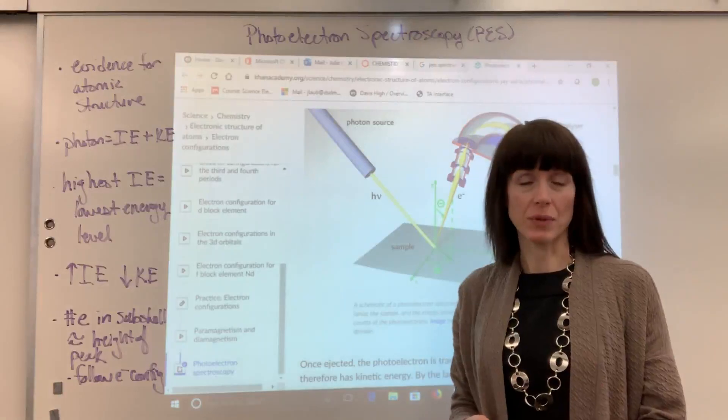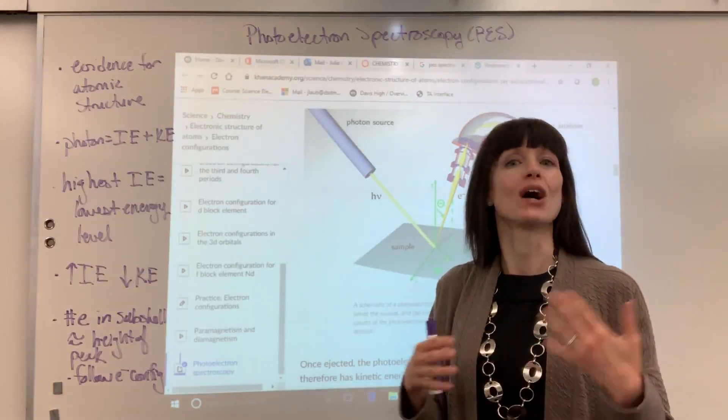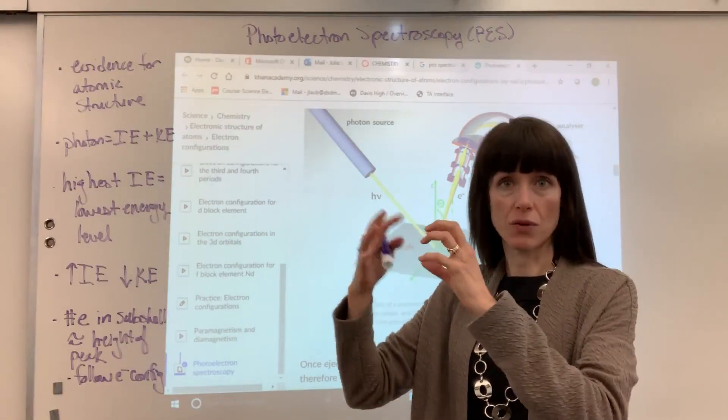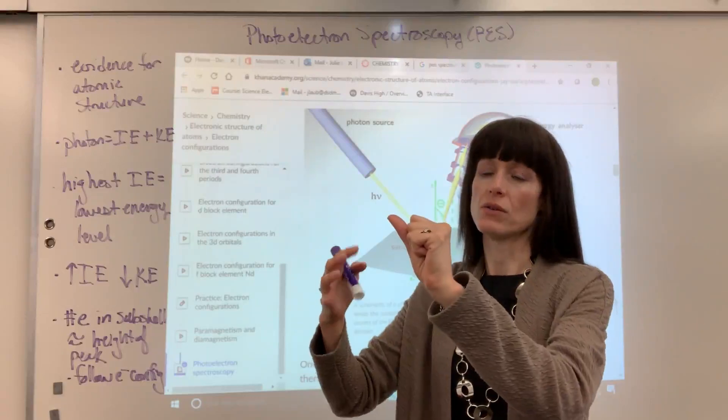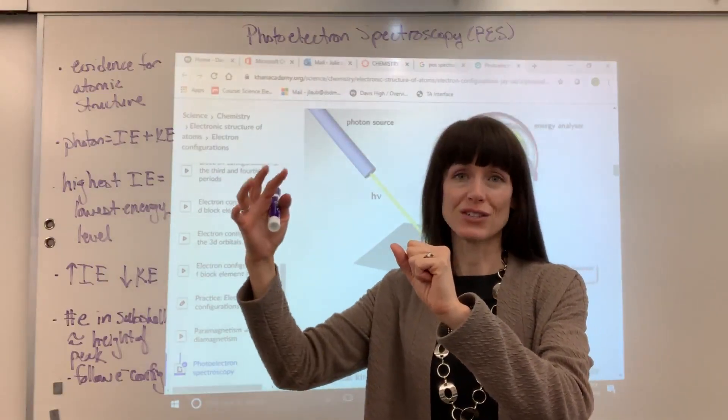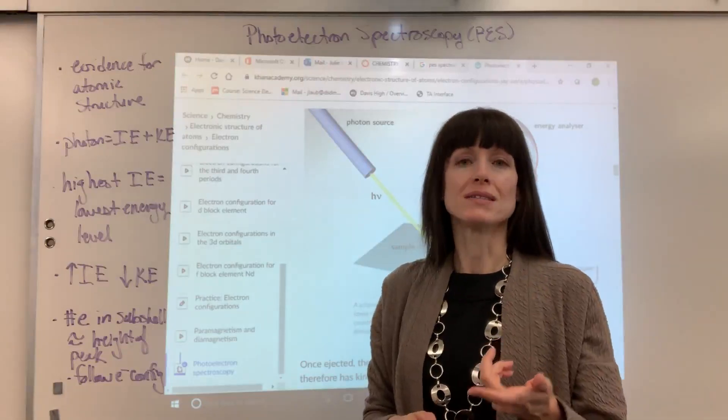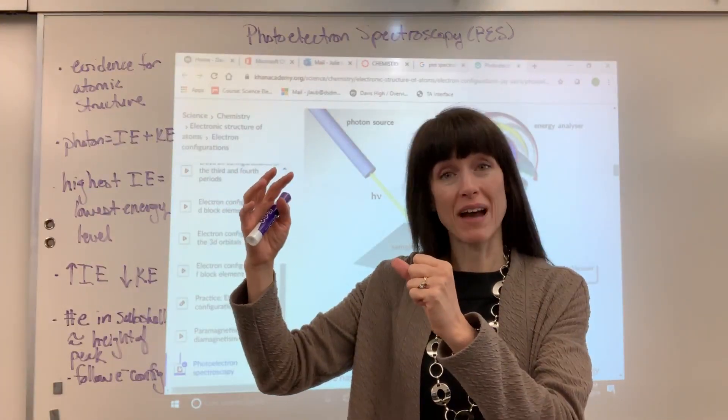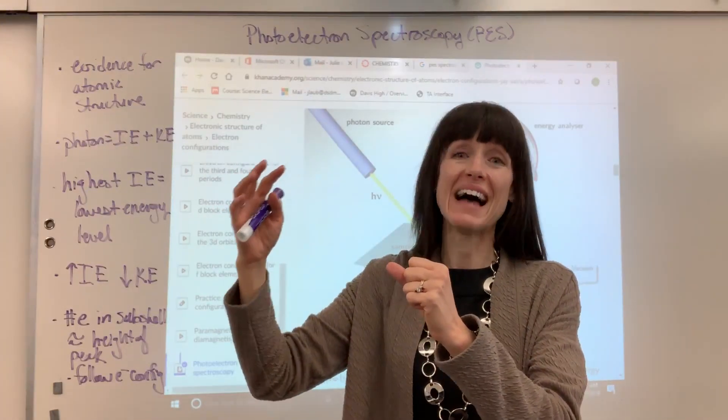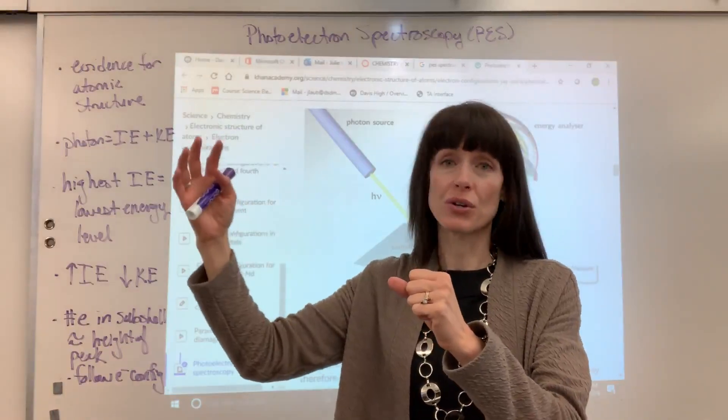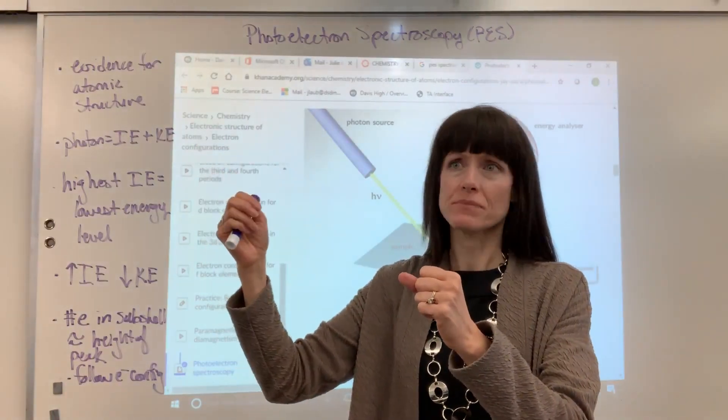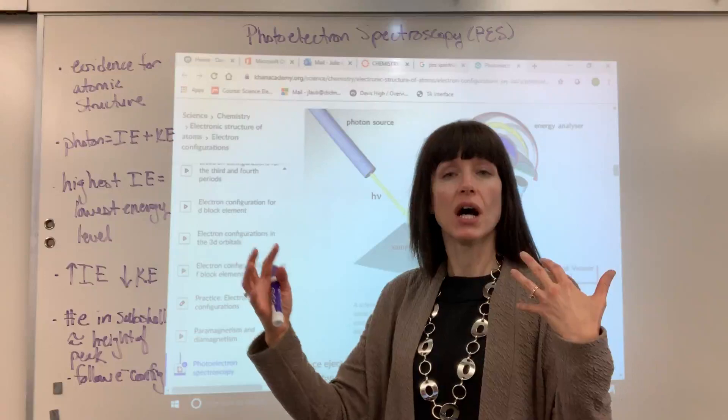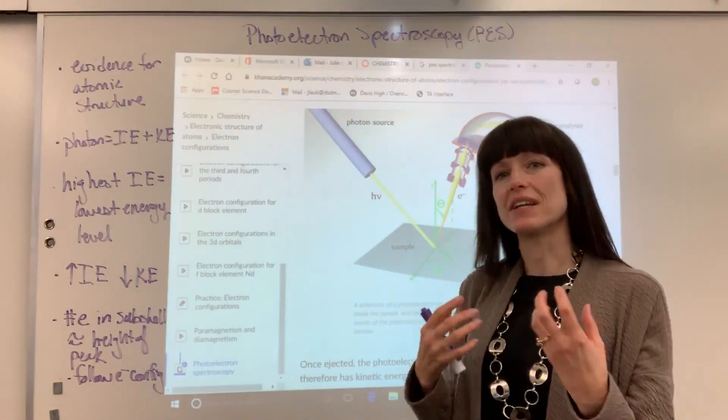So photoelectron spectroscopy is a means by which we can identify the atomic structure. It's an experimental way to find out where the electrons are relative to the nucleus. You've got the nucleus and the first energy level, second energy level, third energy level. But not only that, we can see the subshells. First energy level S subshells, second energy level we can see both mathematically from the experiment the S and the P subshell. Get to the third energy level, we can see mathematically the S, the P, and the D. So it's pretty neat experimental technique to give us a picture of atomic structure. It's evidence for atomic structure.